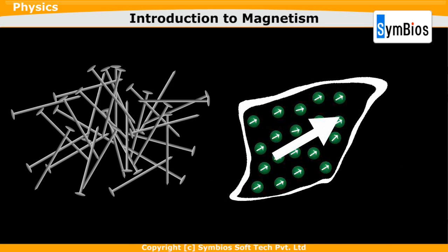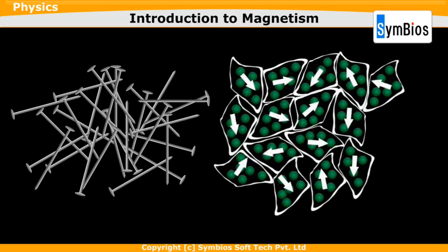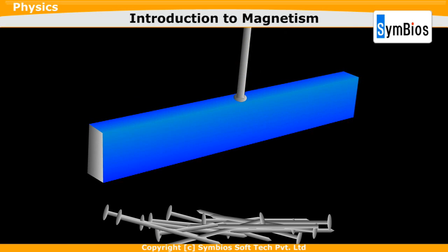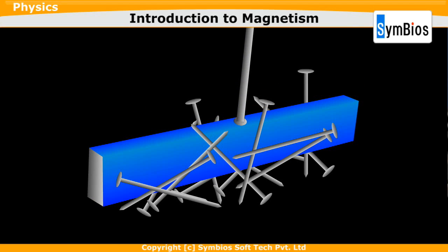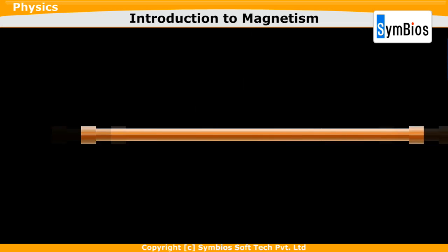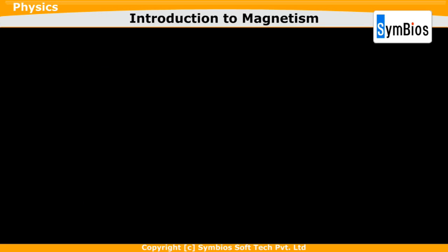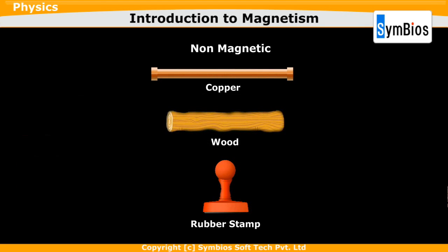Materials that can be magnetized are made up of many domains pointing in all directions. When all these domains point in one direction, the object becomes a magnet. In some materials like copper, these tiny electrons never align and hence cannot be magnetized. These materials are non-magnetic.